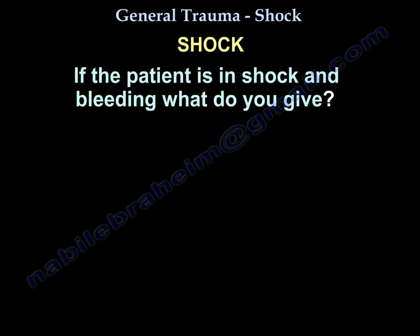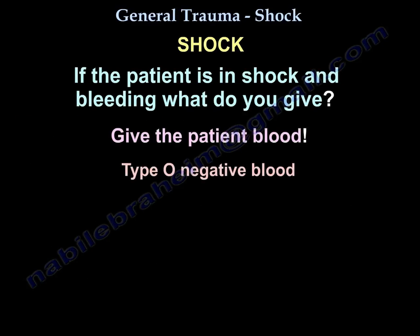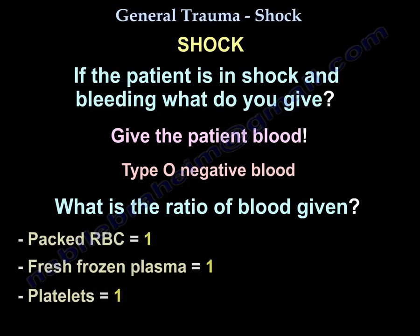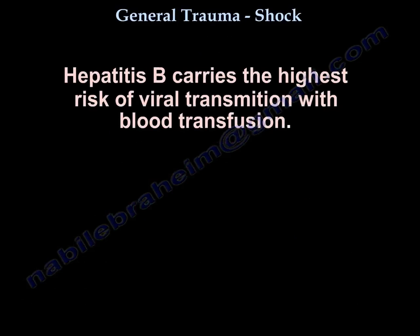If the patient is in shock and bleeding, you give O-negative blood. The ratio is packed RBCs to fresh frozen plasma to platelets in a 1:1:1 ratio. This will avoid dilutional thrombocytopenia. Hepatitis B carries the highest risk for viral transmission in blood transfusion.